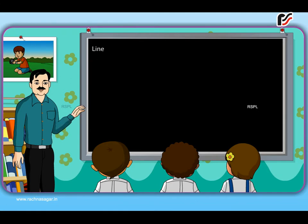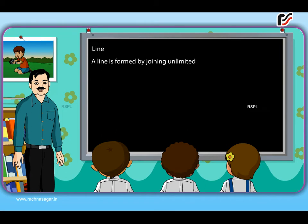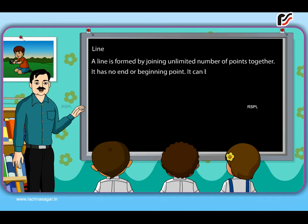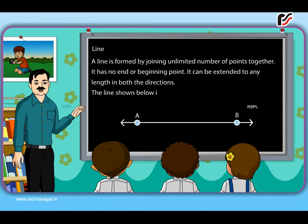Line. A line is formed by joining unlimited number of points together. It has no end or beginning point. It can be extended to any length in both directions. The line shown below is line AB.